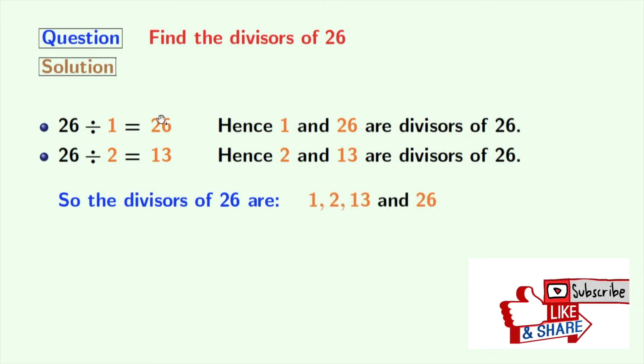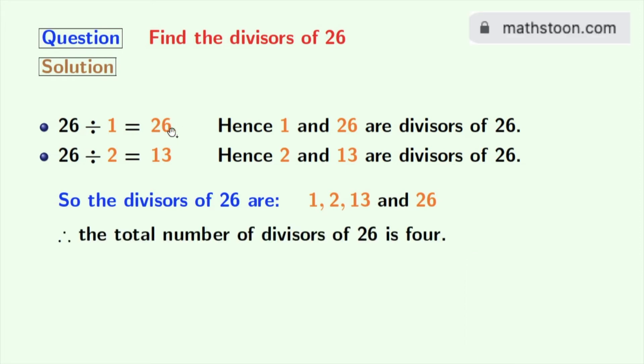These are 1, 2, 13 and 26. So, the total number of divisors of 26 is 4.